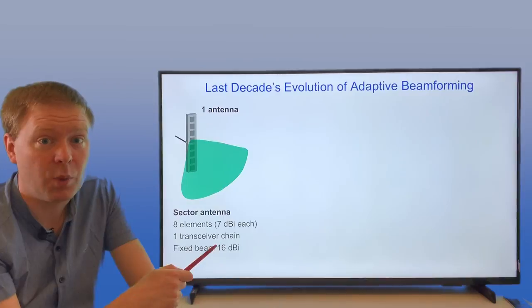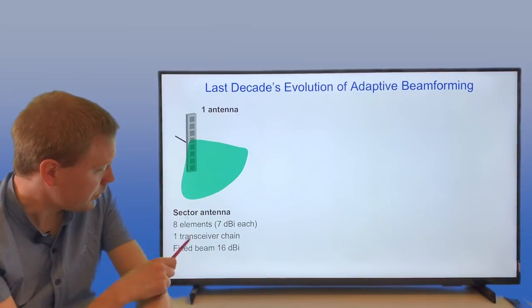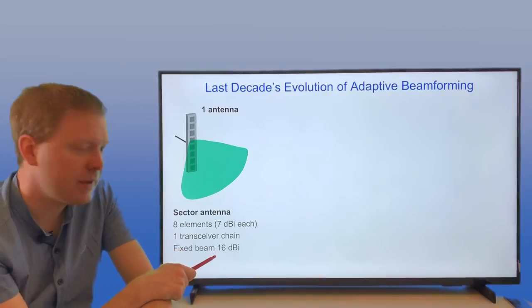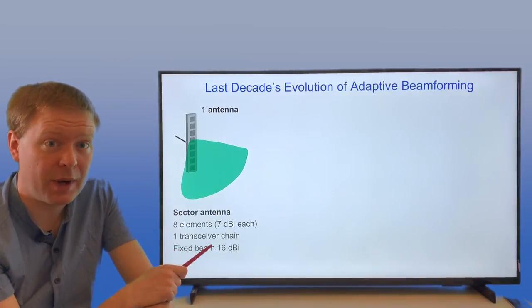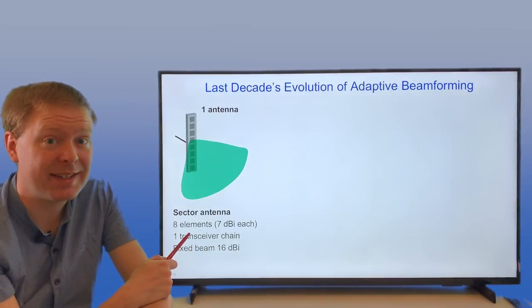We can get a fixed beam gain of 16 dBi if you're at the right location, but there's no flexibility here at all.